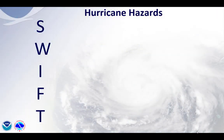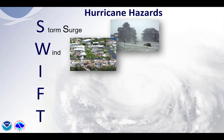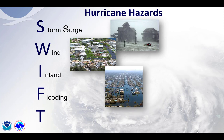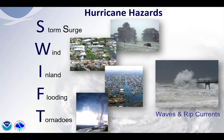When you think hurricane hazards, you want to think of this word: SWIFT. S stands for storm surge, W stands for wind, INF stands for inland flooding, T stands for tornadoes, and then we also have waves and rip currents. Let's dive a little deeper into these hazards.